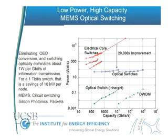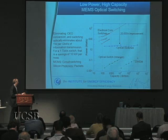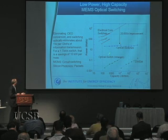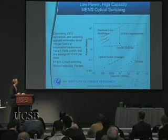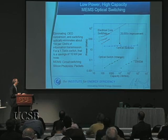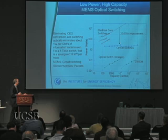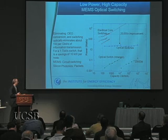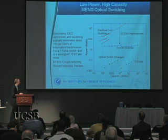The horizontal axis is capacity and the vertical axis is power required. These are all commercial devices. What's inherently possible with optics is what we're working on in the Institute — very much lower power optical switching. Because it's just a capacitor, you can get tremendous capacity: perhaps 1,000 terabits with less than a watt of switching power.